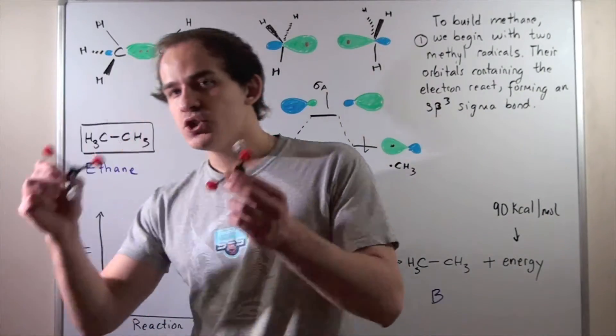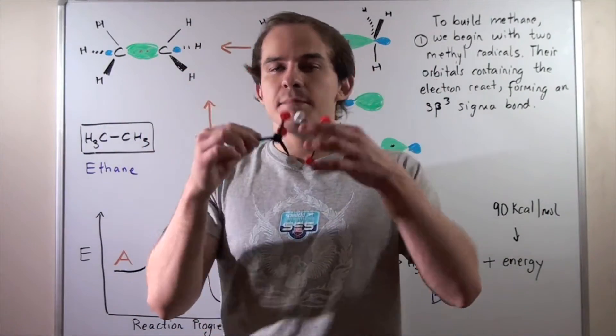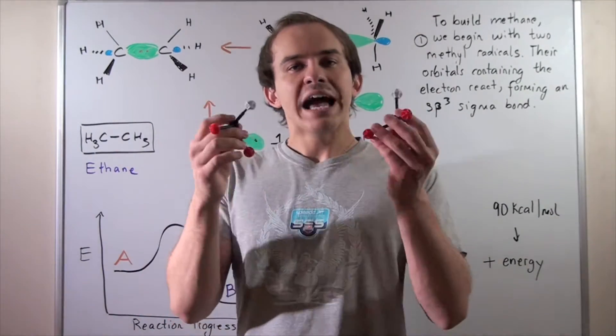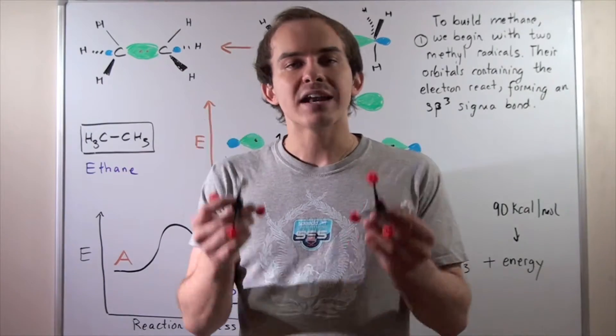So we're basically going to take two methane molecules, combine them, and form our ethane. But before we actually combine them, we have to turn them into methyl radicals.